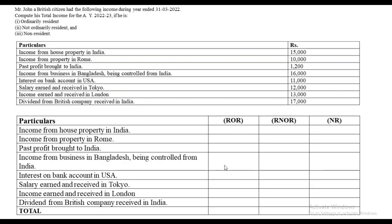The question given is: Mr. John, a British citizen, had the following income during the year ending 31st March 2022. Compute his total income if he is an ordinary resident, not an ordinary resident, and a non-resident. They have given you the list of all the income. You will note down the particulars as-is, then make three columns: resident and ordinary resident, resident but not ordinary, and non-resident. This is the format of the sum. And then we just apply our rules.